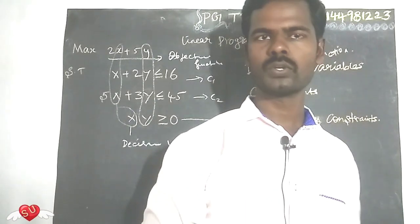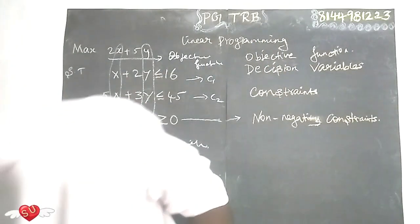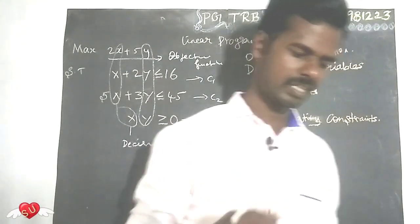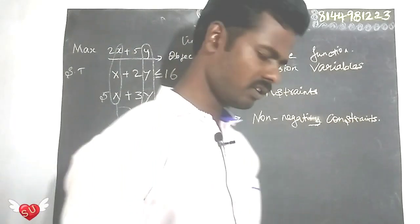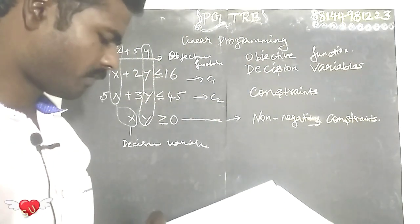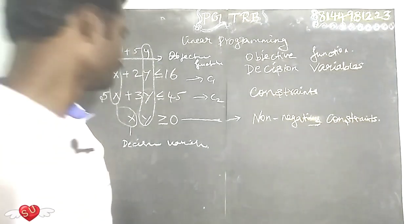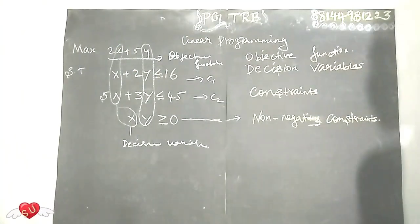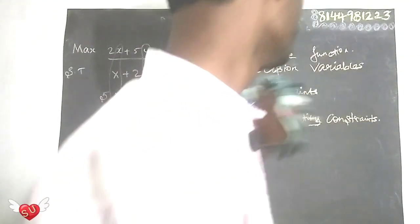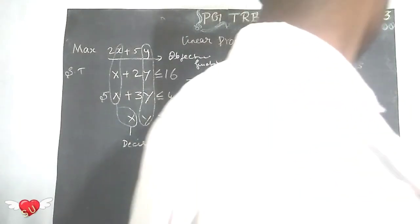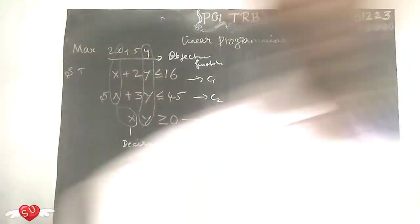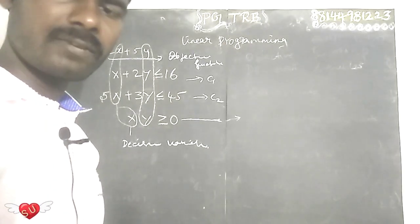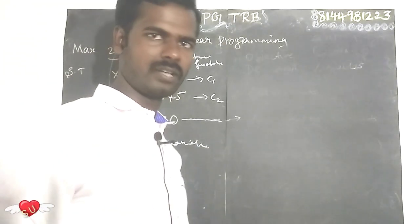So the optimal solution is the correct thing. The optimal solution is the corner point — the corner extreme point — in the feasible region. So first: objective functions, decision variables, constraints, non-negative constraints. We can use this formula to do the problems, and then find optimal solutions.